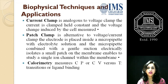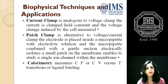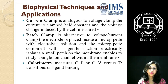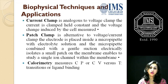Current clamp is analogous to voltage clamp, where current is held constant and the voltage change induced by the cell is measured. Patch clamp is an alternative to voltage/current clamp: an electrode is placed inside a micropipette combined with gentle suction, electrically isolating a small patch of membrane, enabling study of a single ion channel within the membrane. Calorimetry measures the heat capacity (Cp or Cv) versus transition or ligand binding.